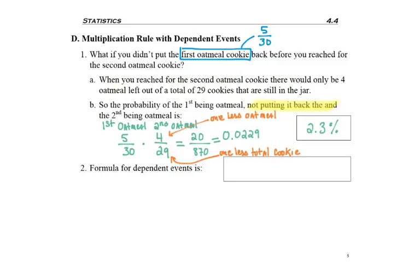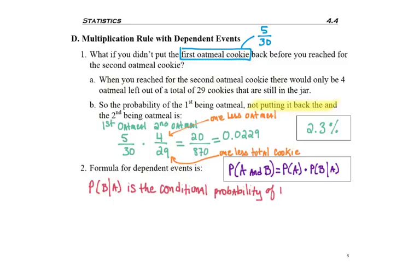So the formal definition for multiplication rule with dependent events is the probability of A and B is the probability of A times, well I can't say B because B has been affected by A. So we have the way of writing it is read the probability of B given A. That straight line is read given. The probability of B given A is the conditional probability of B happening given A has already happened.